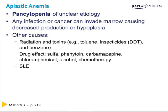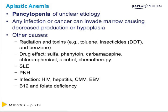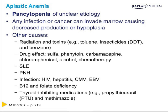You can have it on an autoimmune basis. Lupus can damage all three cell lines. And PNH, which is a clonal stem cell disorder. Various infections — why HIV and hepatitis B and C and CMV and Epstein-Barr suppress the marrow is not known. B12 and folate deficiency could do all three cell lines, not just red cells. And the thyroid inhibiting medications — the thyroperoxidase inhibitors propylthiouracil and methimazole can have an idiosyncratic suppression of the bone marrow.